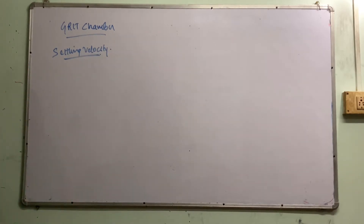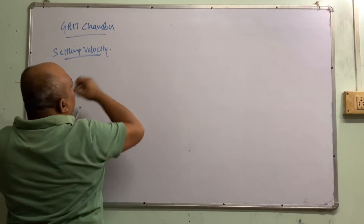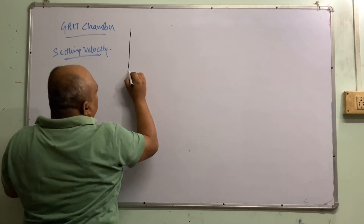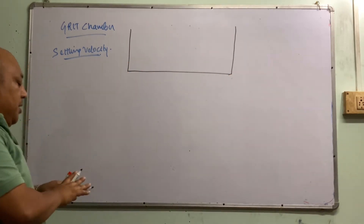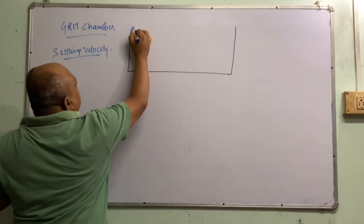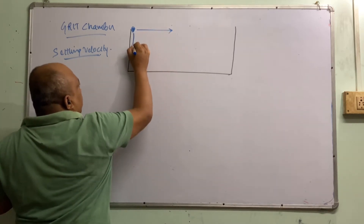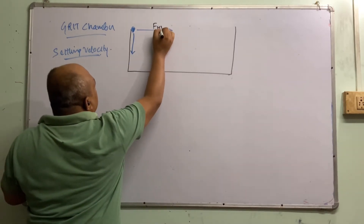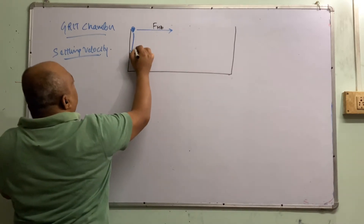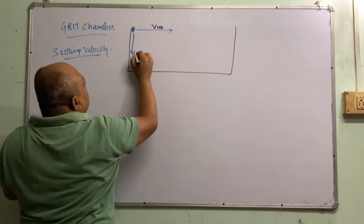Here the basic fundamentals are a little bit different. This is our grit chamber. The grit particles are going to flow through this — it is going to come over here. This is the horizontal velocity, and this is the settling velocity.